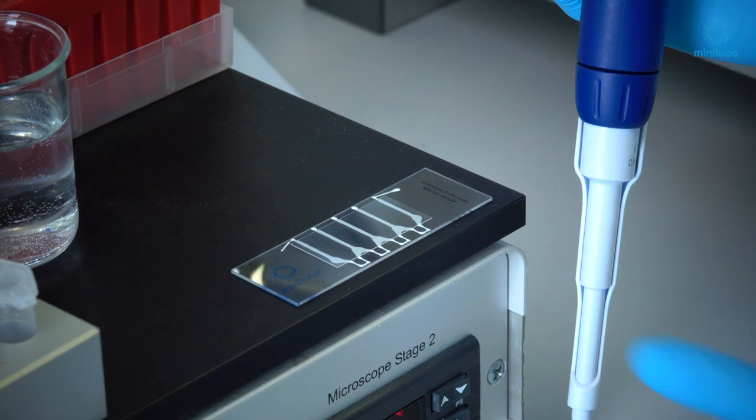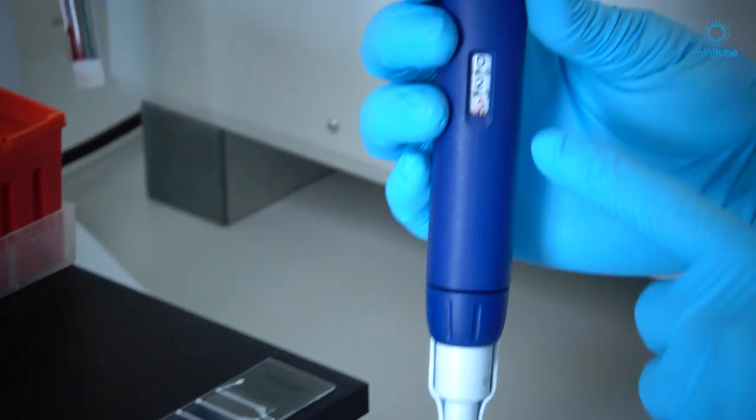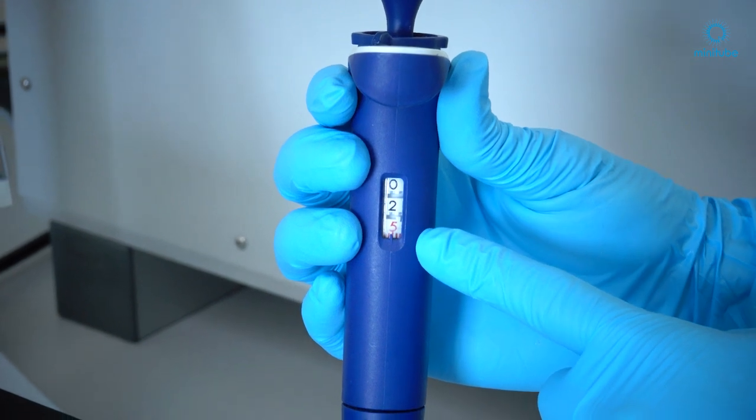If you use a mini tube counting chamber, you have a filling volume of 2.5 microliters.